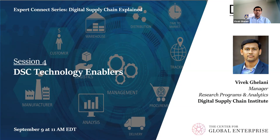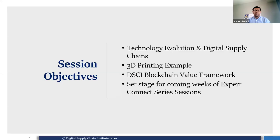We hope to have a little time for Q&A at the end, but if we don't, please feel free to reach out to us at any time and we are happy to have a detailed conversation about any of your questions. Today's session is the fourth session in the series, which is about DSC technology enablers. During today's session we'll talk about technology evolution and digital supply chains, briefly cover a 3D printing example, then jump into the DSCI blockchain value framework, and set the stage for the next and final session.